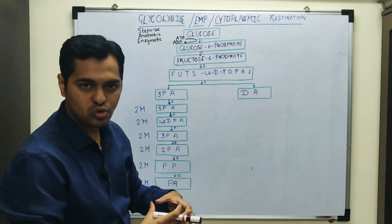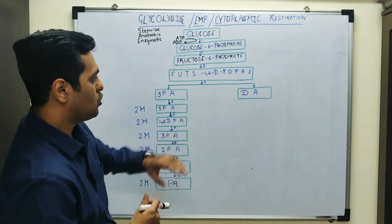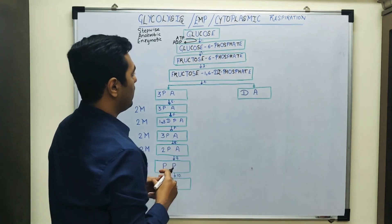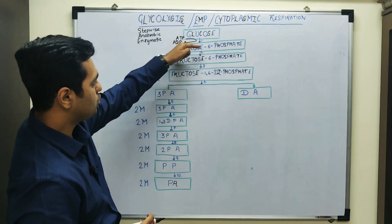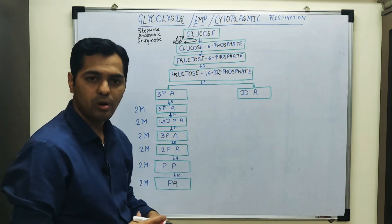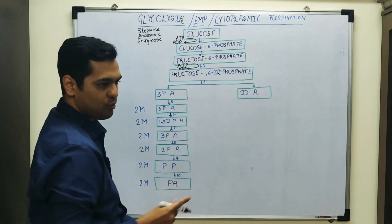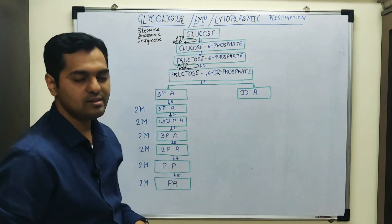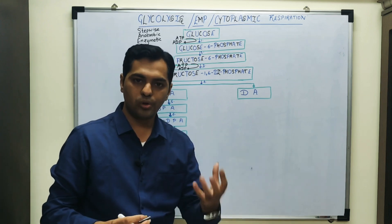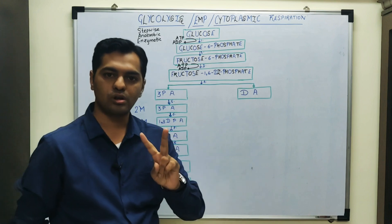Glucose is an aldose sugar and fructose is a ketose sugar, making them functional group isomers. In step 3, fructose 6-phosphate is converted into fructose 1,6-diphosphate. The phosphate group at the sixth carbon is joined by another phosphate at the first carbon, hence '1,6-diphosphate.' ATP again donates the phosphate, becoming ADP. Steps 1 and 3 — the activation or preparatory stage — consume a total of 2 ATP molecules.